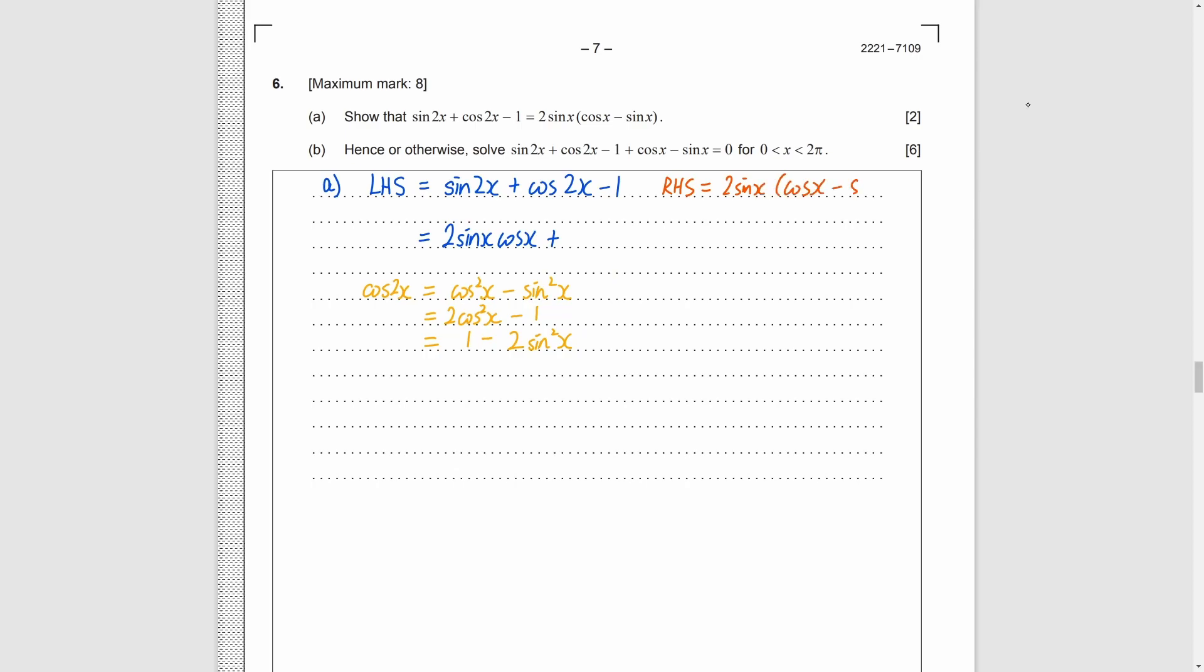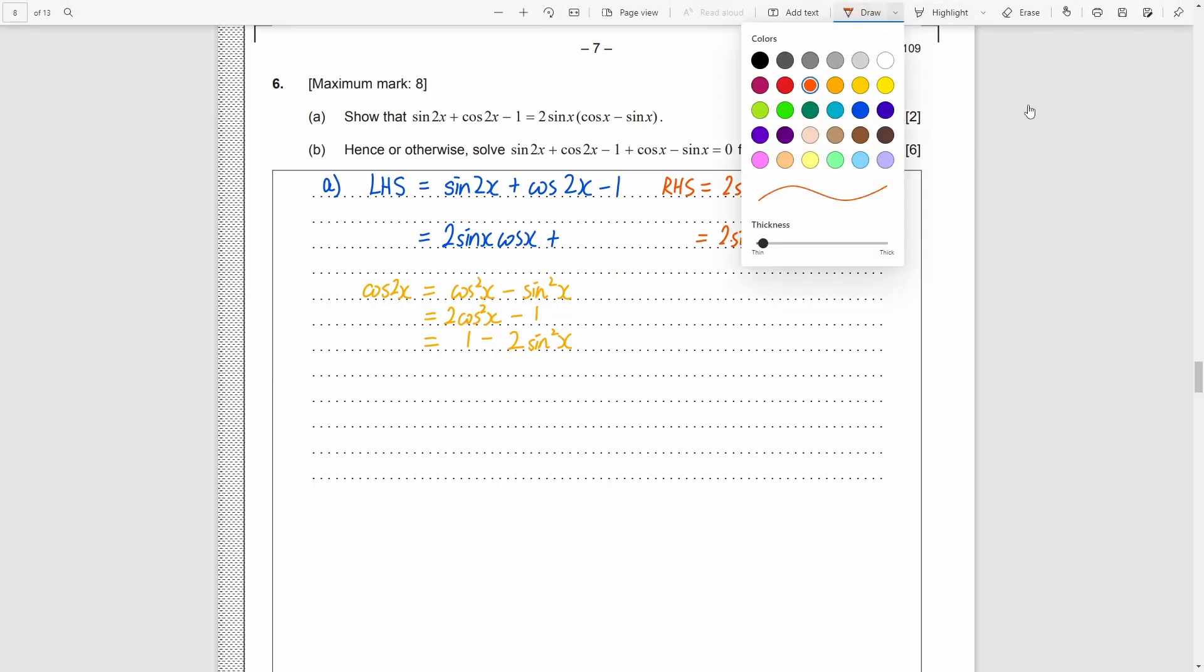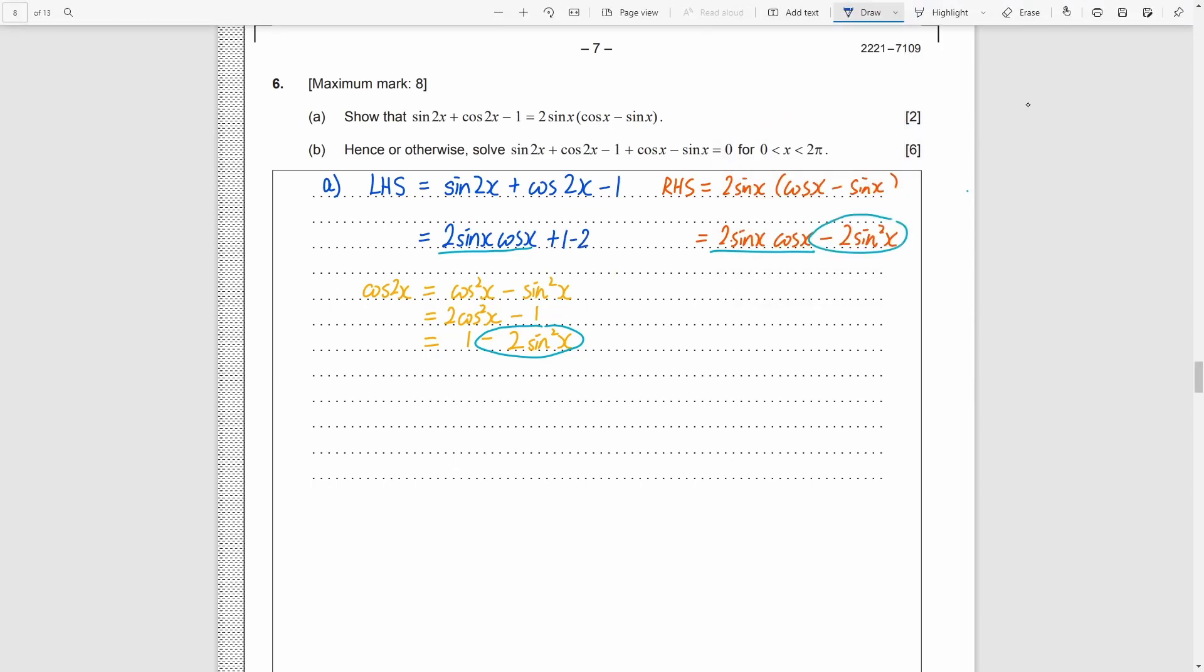We also need to consider the right-hand side. After we expand it, we find that the 2 sine x cosine x part are the same. And the only difference is the negative 2 sine square part. So, we better choose the way containing 2 sine square x. After replacing the cosine 2x and do some simple calculation, we can show that both sides are the same.